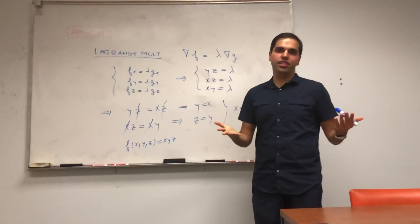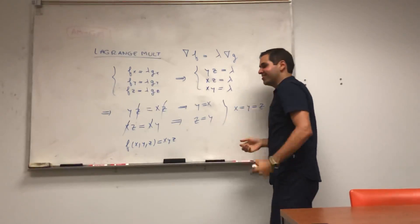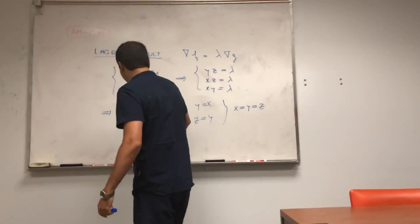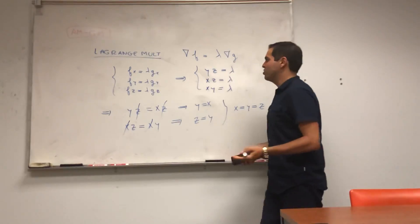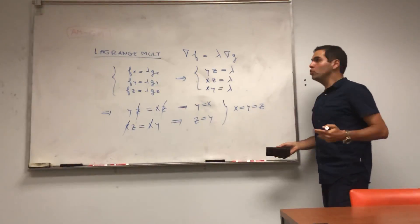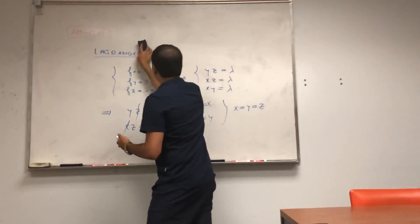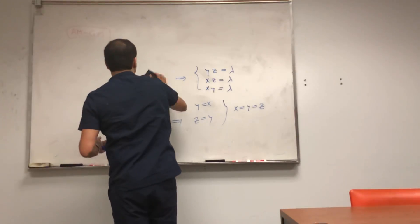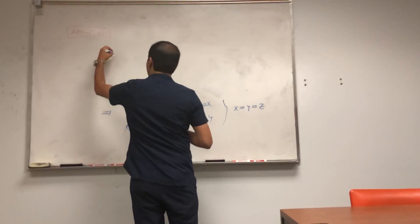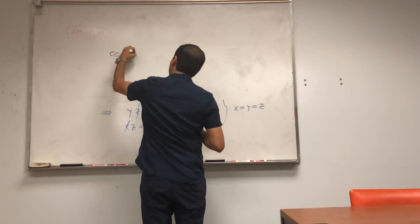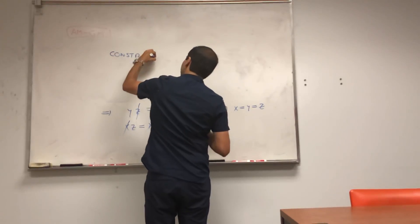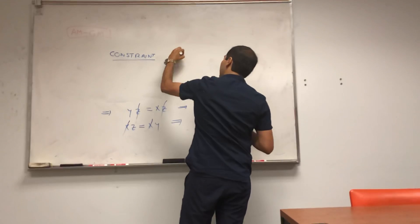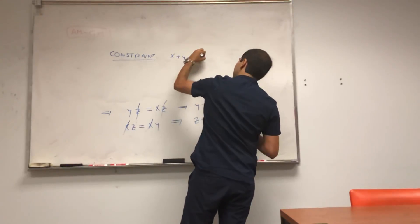But the question is, what are x, y, and z? And for this, as is usual with Lagrange multipliers, you just used the constraint last. And so remember, what was our constraint? Well, simply that, x plus y plus z equals to c.